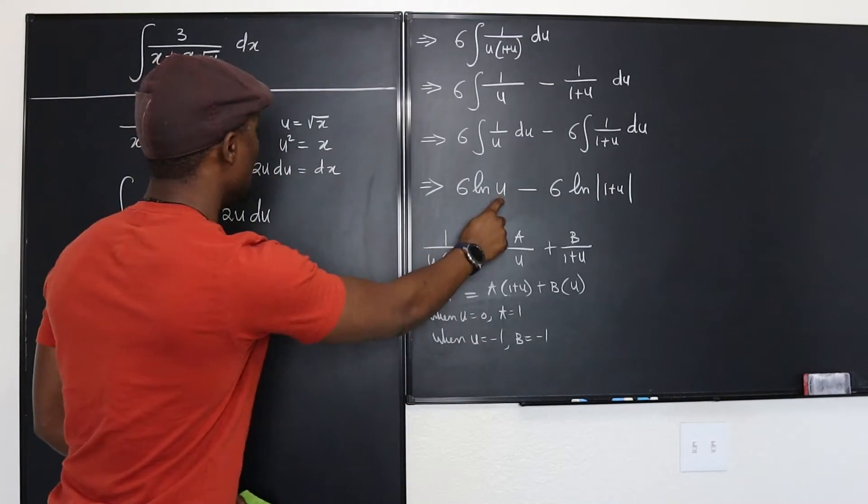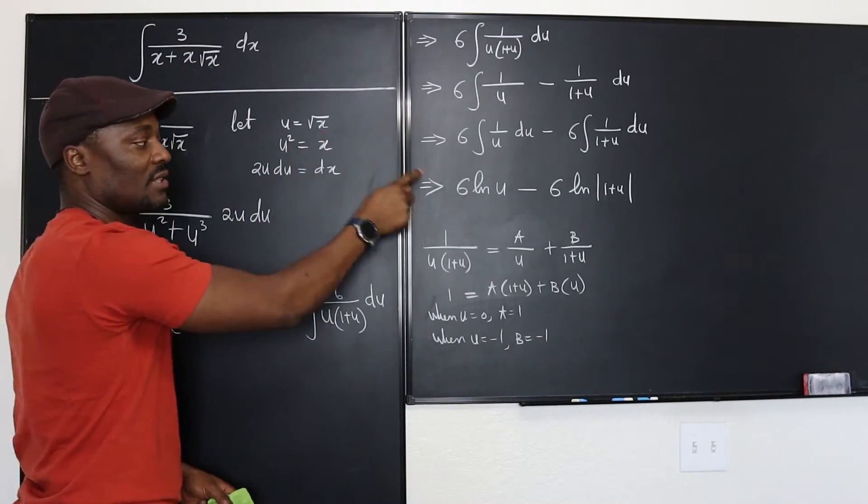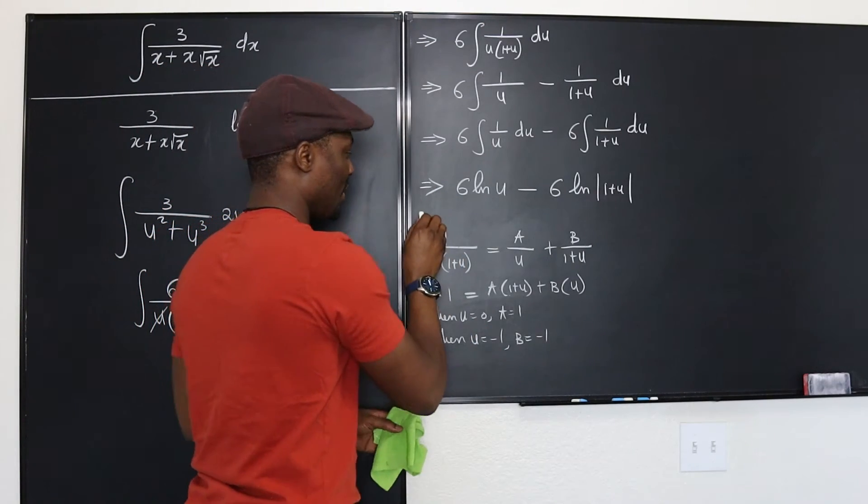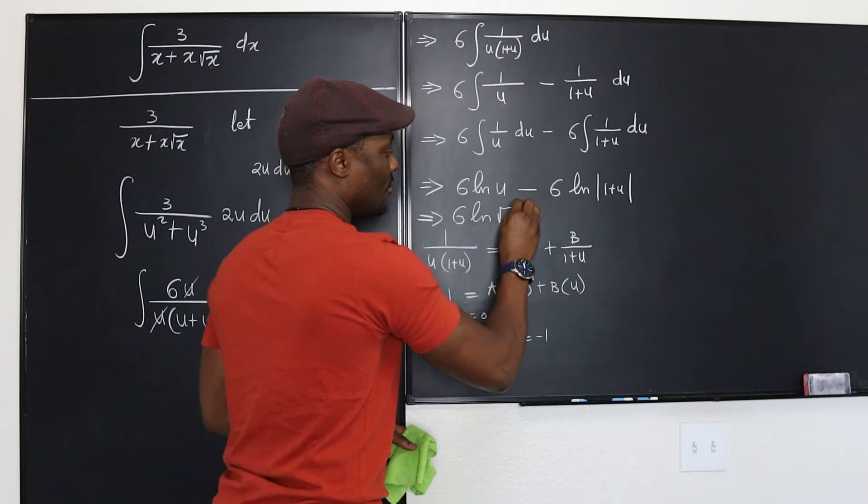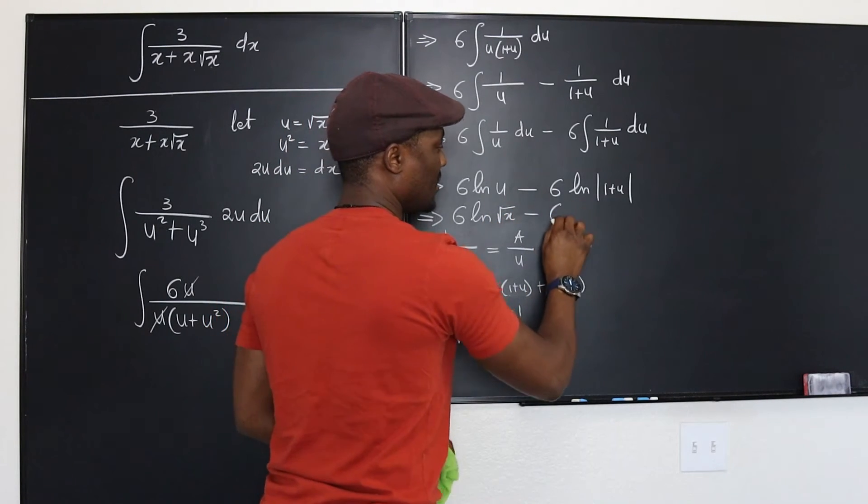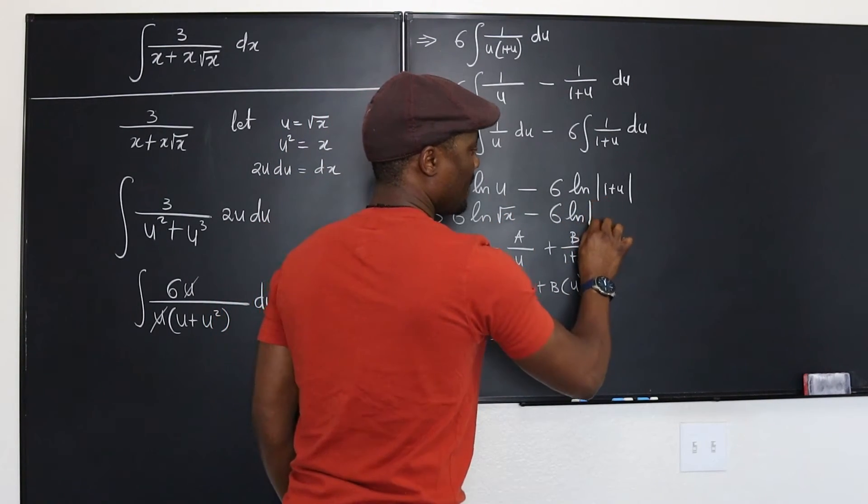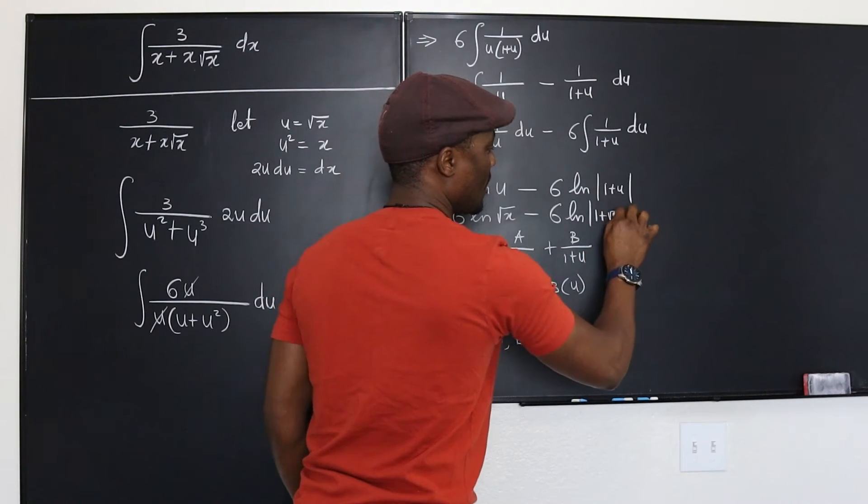This question was not about u, it's about x, so we have to go back and replace u. Remember u is the square root of x, so we're going to rewrite this. This is going to be 6 ln root x minus 6 ln 1 plus the square root of x.